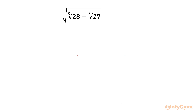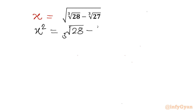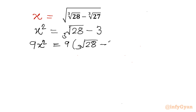Let's get started by considering our expression equal to x. I will consider squaring both sides. So x squared will be equal to cube root 28 minus cube root 27, and cube root 27 is 3. Now I will multiply both sides by 9, so 9x squared equals 9 times cube root 28 minus 27.